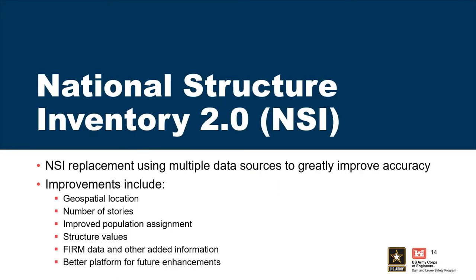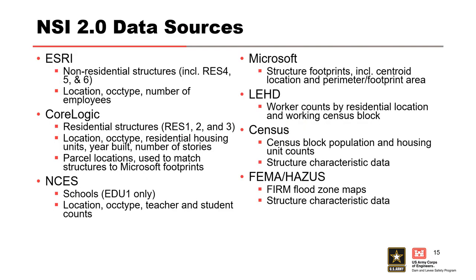NSI 2.0 came out about three or four years ago. The original National Structure Inventory was based on Hazus MH census data and structure location. There were certain faults — the first time you develop a database, there are issues. The improvements on NSI 2.0 covered structural location, number of stories, population distribution, and more. Data sources used include an ESRI national dataset of commercial and industrial structures with population counts, with structures placed exactly where they are in space, used for non-residential structures including hospitals, hotels, and prisons.